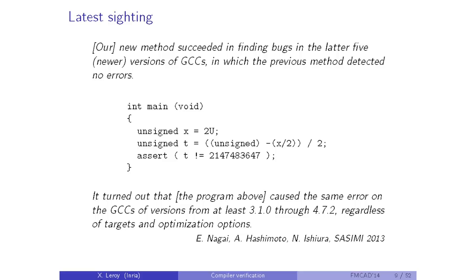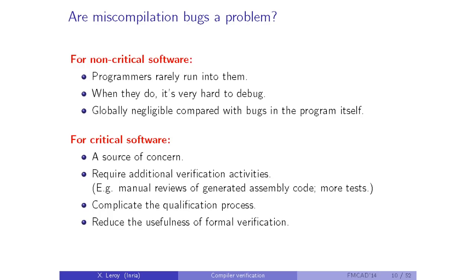Random testing of compilers became a cottage industry. Another team in Japan found that a small piece of code computing only constants was miscompiled by all versions of GCC from 3.1 to 4.7.2 — about 15 years of GCC. For non-critical software, miscompilation bugs may not matter that much: programmers rarely run into them, and bugs introduced by the compiler are negligible compared to bugs already in the source code. But that's not the case for critical software.